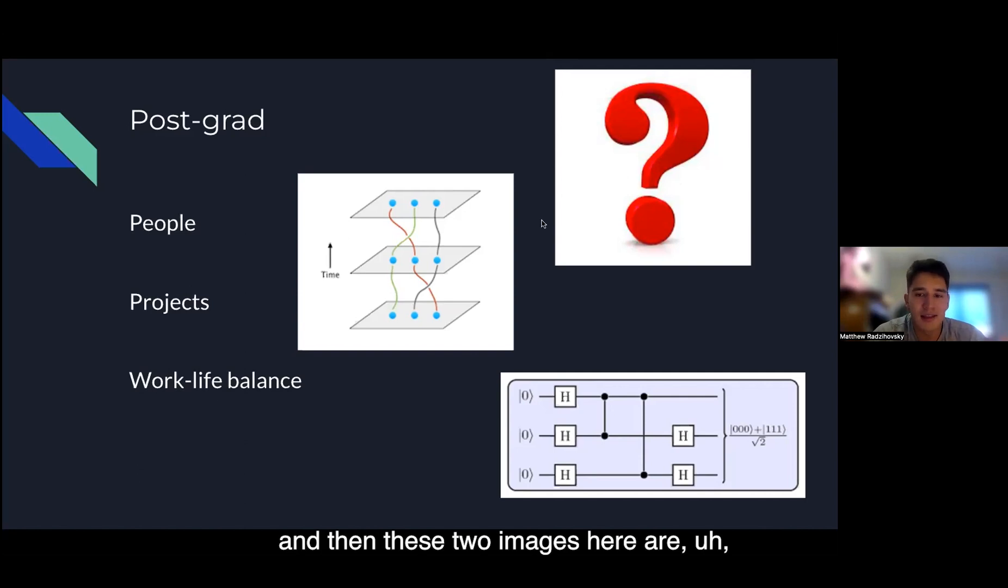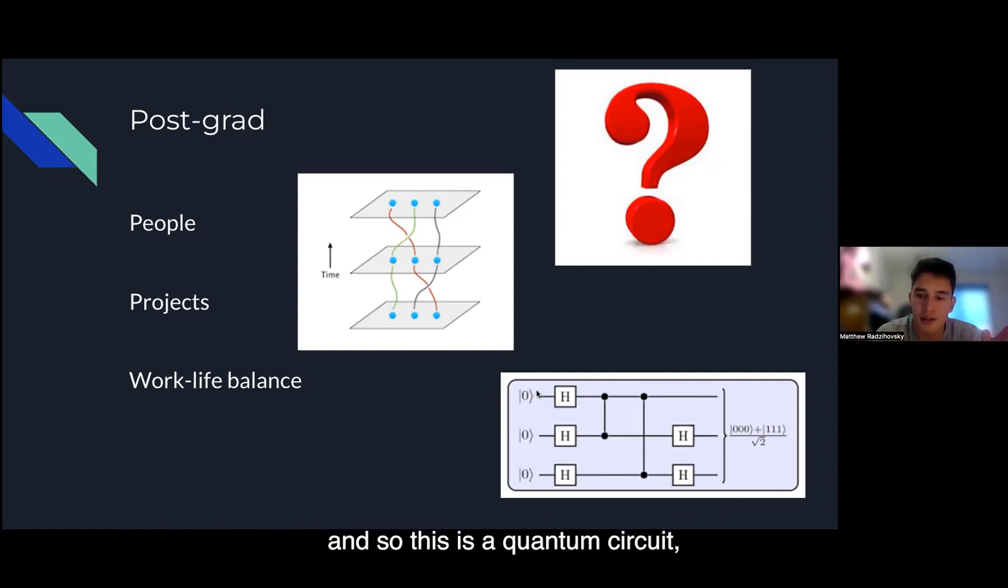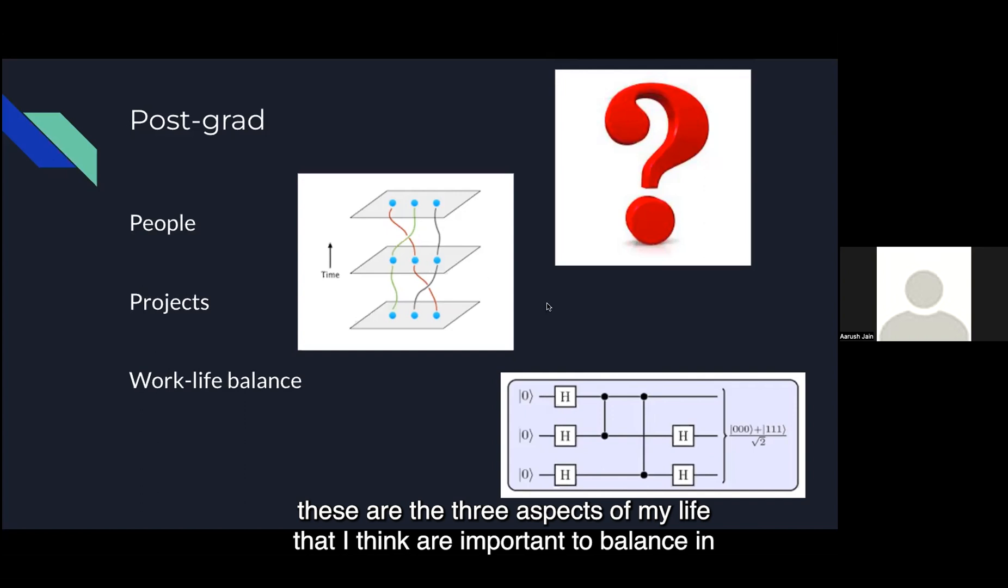These two images here are part of the quantum computing research that I'm doing now at MIT. This is a quantum circuit and this is showing braiding of topological quantum bits. These are the three aspects of my life that I think are important to balance in post-grad.